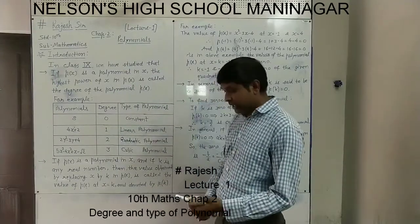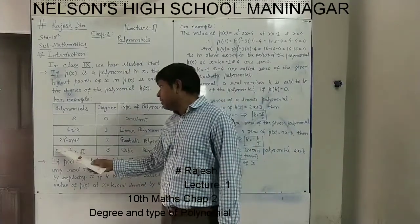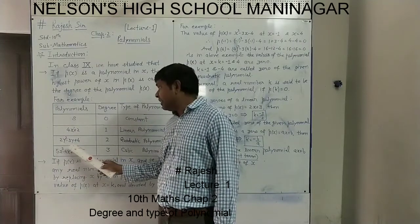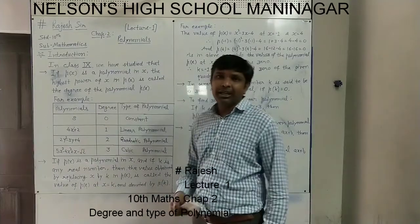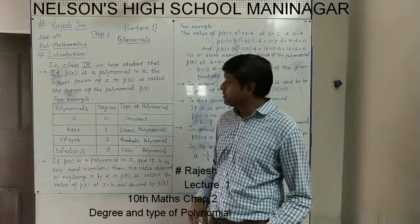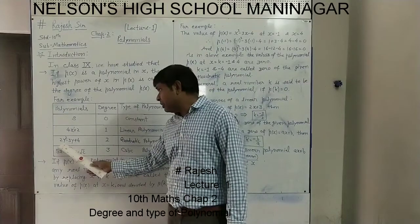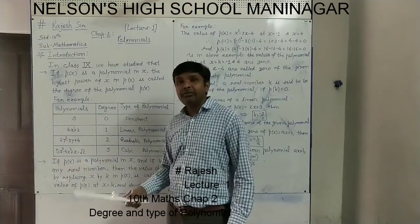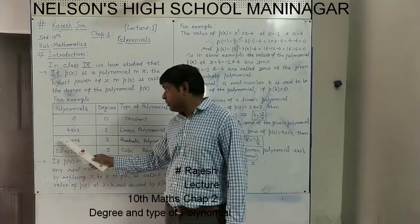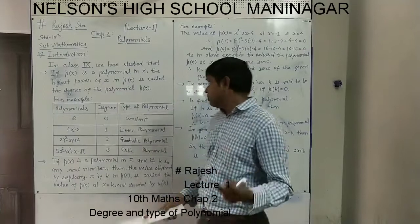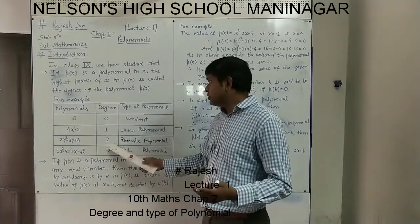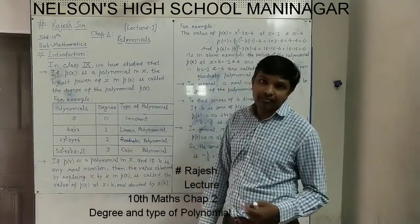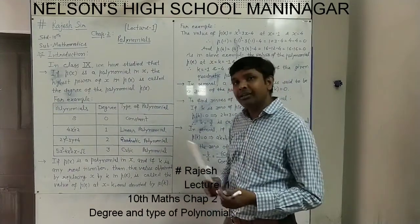The next example is 2y squared minus 3y plus 4. Here the variable is y — we can use x, y, z or any other variable. Here y has power 1 in one term and power 2 in another term. So the highest power is 2, meaning its degree is 2. If the degree is 2, that type of polynomial is called a quadratic polynomial.